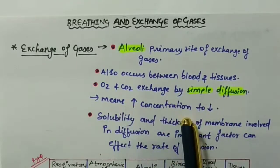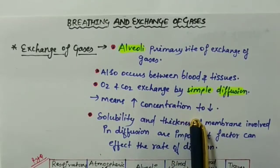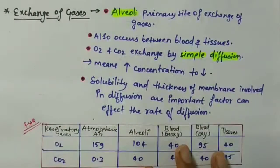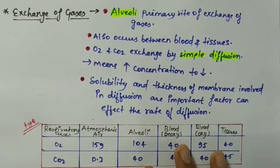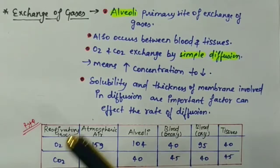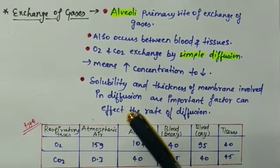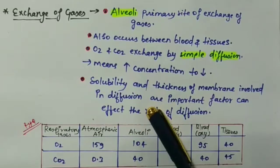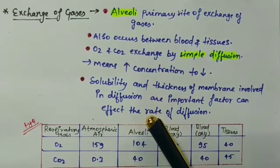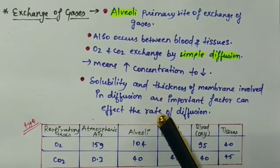Diffusion moves gases from higher concentration to lower concentration. It is an important factor for the rate of diffusion. The gases' solubility and the membrane will decide what the rate of diffusion of gases will be.